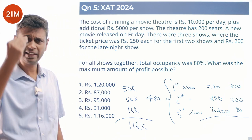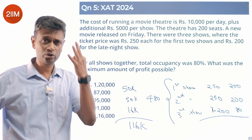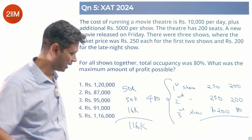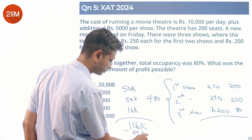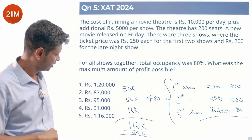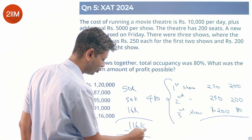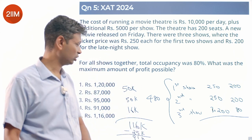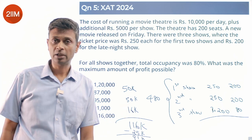Total cost is 10,000 per day plus 5,000 per show for three shows, which is 15,000. Total cost is 25,000. Subtracting from revenue: 1,16,000 minus 25,000 gives a maximum profit of 91,000 rupees.